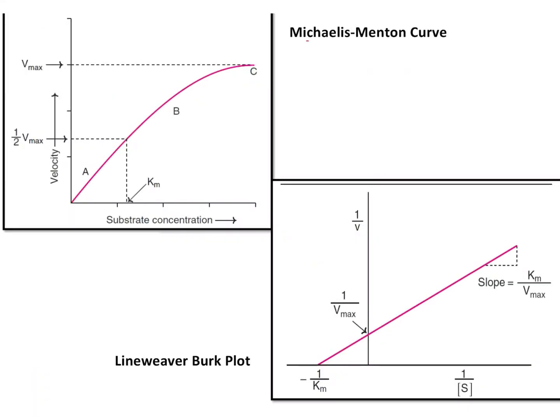There are two different ways of expressing Km and Vmax. One is a normal Michaelis-Menten curve, which is a graph between substrate concentration and reaction velocity. If you plot it, it results in a hyperbola-shaped curve. Since it is a curve and not a straight line, it is difficult to obtain the exact Vmax and Km values from this graph.